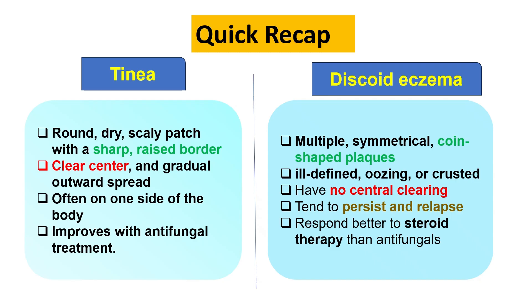Let's do a quick recap. Tinea usually appears as a round, dry, scaly patch with a sharp, raised border, clear center, and gradual outward spread, often on one side of the body, and it improves with antifungal treatment. Discoid eczema, on the other hand, shows multiple, symmetrical, coin-shaped plaques that are ill-defined, oozing or crusted, have no central clearing, tend to persist and relapse, and respond better to steroid therapy than antifungals.